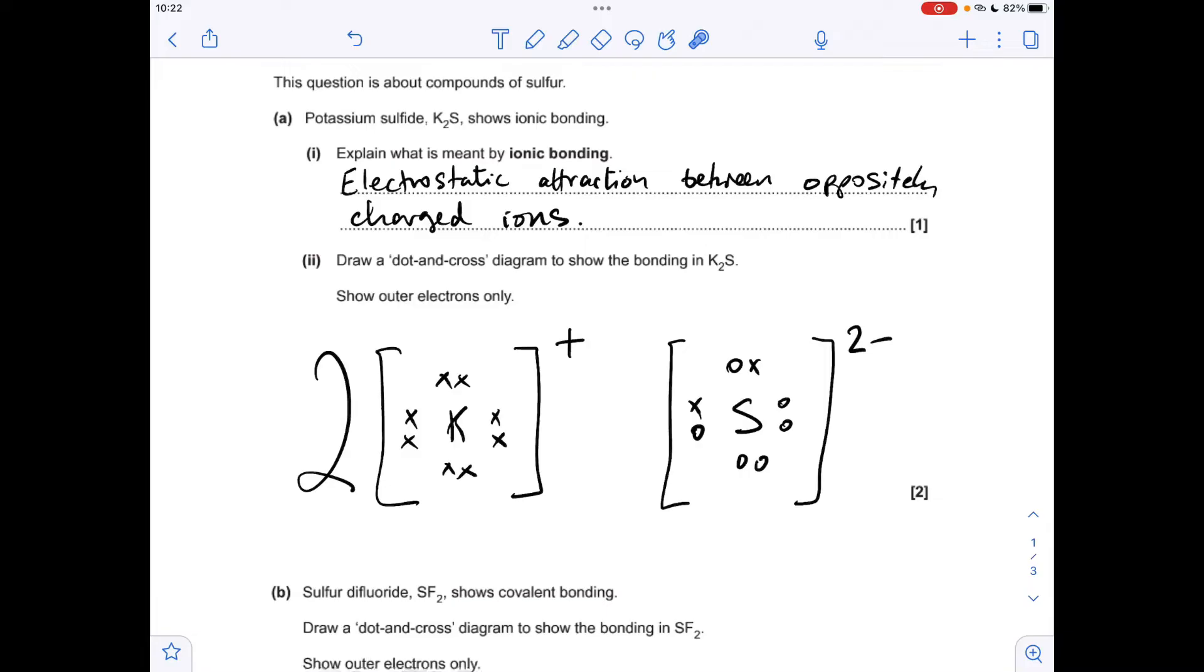Moving on to the dot and cross diagram for potassium sulphide, we need two potassium ions. I've gone for crosses to represent the electrons for the potassium with a full outer shell. You can have an empty shell there if you want, but I tend to do that. Two of those, one plus charge each, or if you wanted to, you could draw two separate ions.